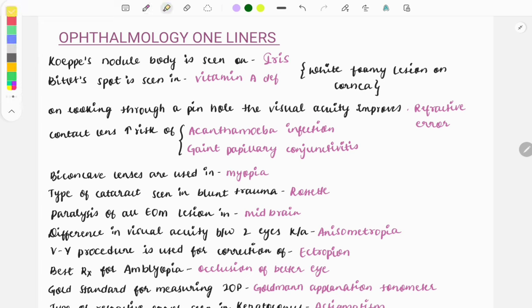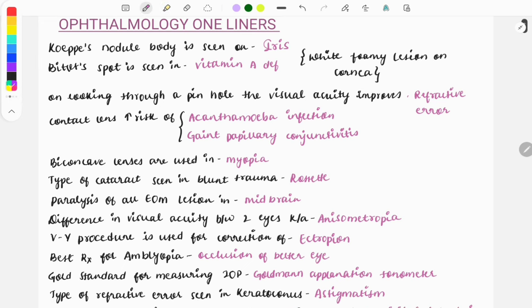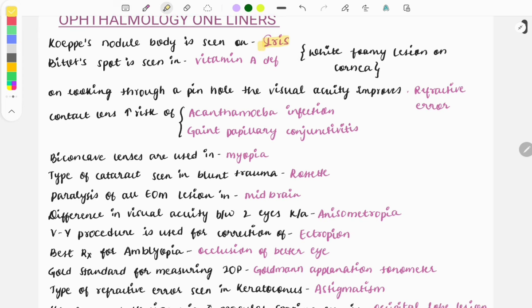Let's begin. The Koeppe nodule body is seen on the iris in granulomatous uveitis. Busacca nodules are also found in granulomatous uveitis. The Bitot spot is seen in vitamin A deficiency. It is a white foamy lesion on the cornea, and image-based questions are asked on this. Vitamin A deficiency is the most common cause of blindness in children.